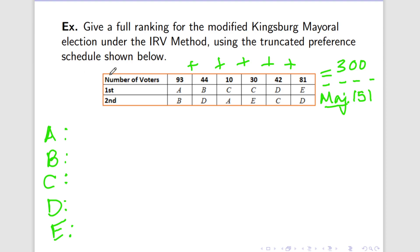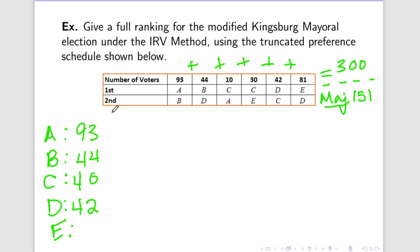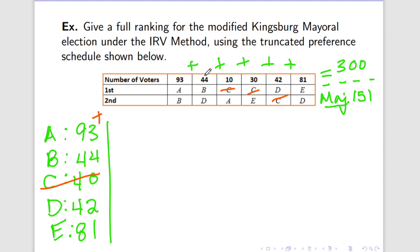Okay, let's start tallying. A appears in the first place row only once for 93 votes. B appears only once with 44. C appears twice — once for 10 and once for 30 — so that actually means that C gets 40. D appears for 42. And E gets 81. So it appears that nobody has majority, and it appears that C has the fewest. So we're just going to eliminate C from the election. Now, C had first place votes both in column 3 and in column 4. So that means that some of its votes are going to go to A, and some of them are going to go to E.